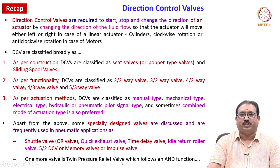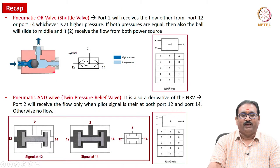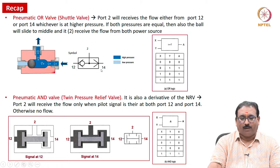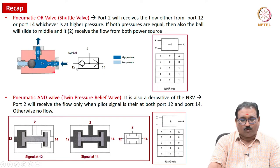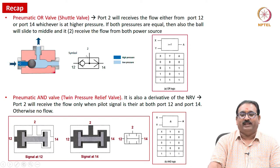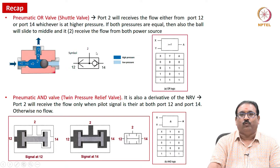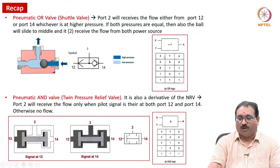Let us see the pneumatic OR valve — already we have seen it, also known as a shuttle valve. Port 2 receives the flow either from port 12 or port 14, whichever pressure is highest. Or when both 12 and 14 are at equal pressure, the ball moves to the center and port 2 still receives the flow. That is why it is known as the OR function or OR logic. X and Y are the signals corresponding to ports 12 and 14, and A is nothing but port 2.